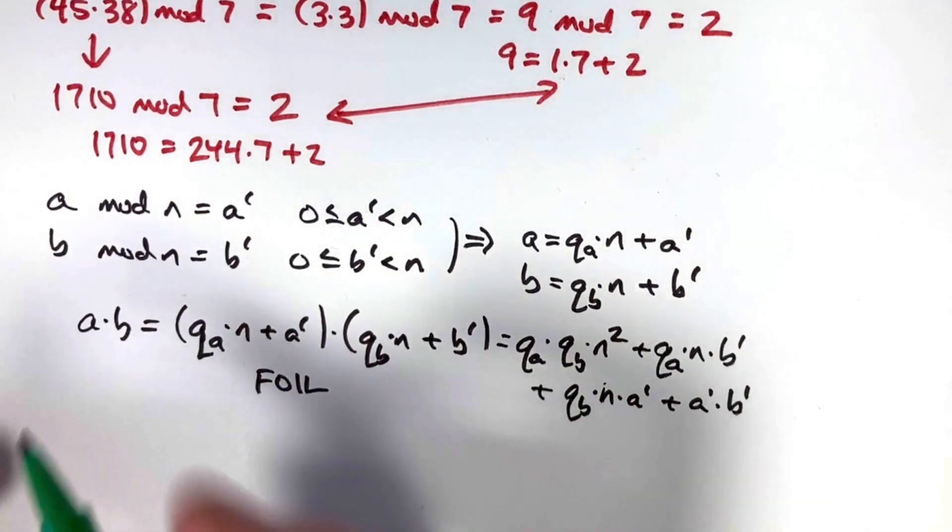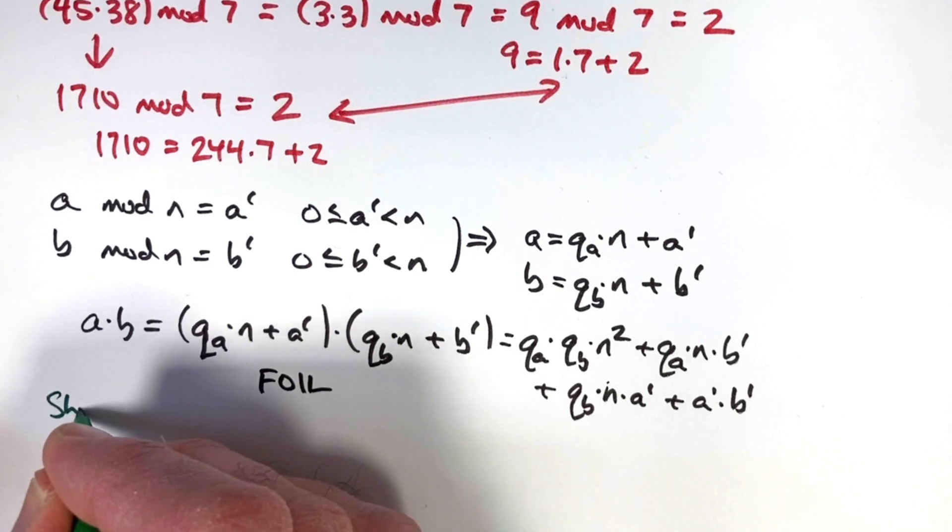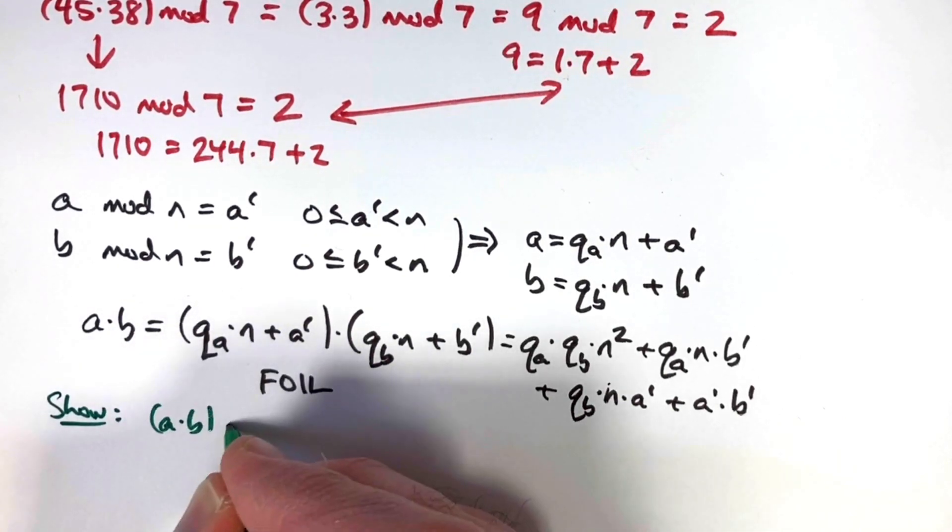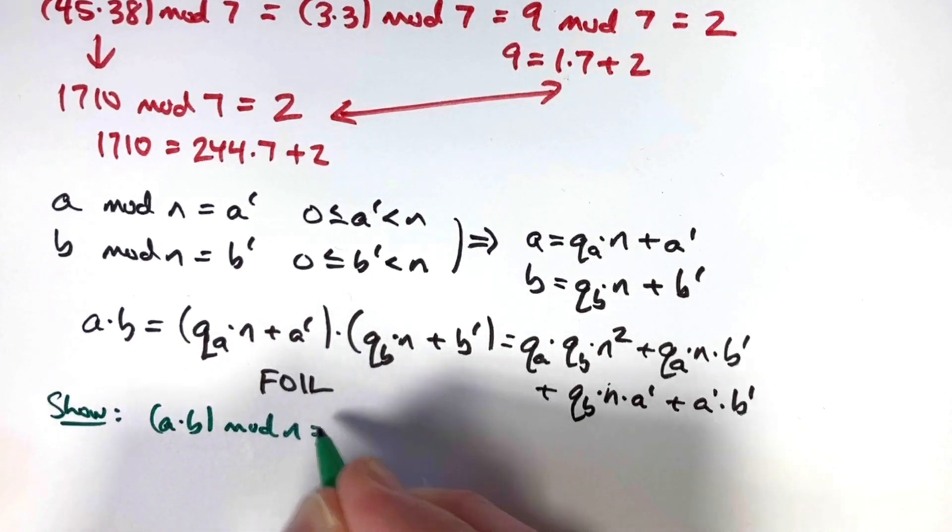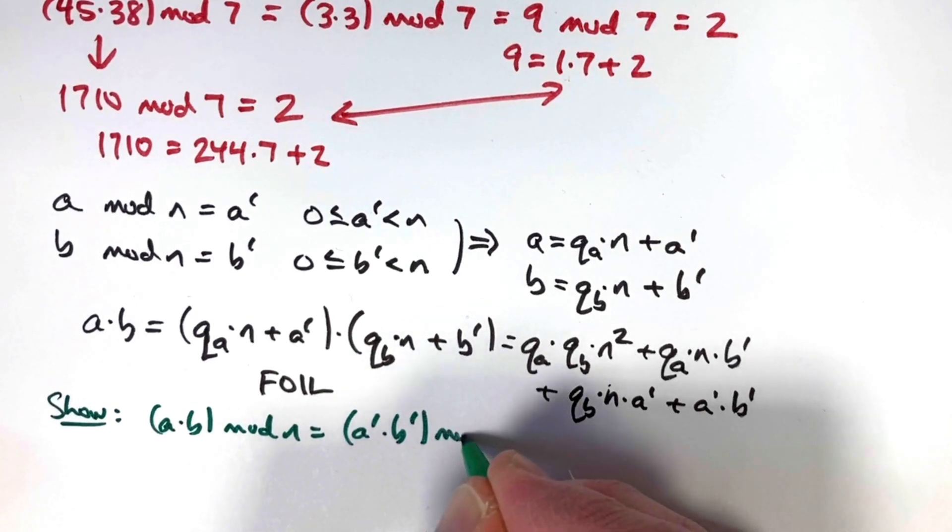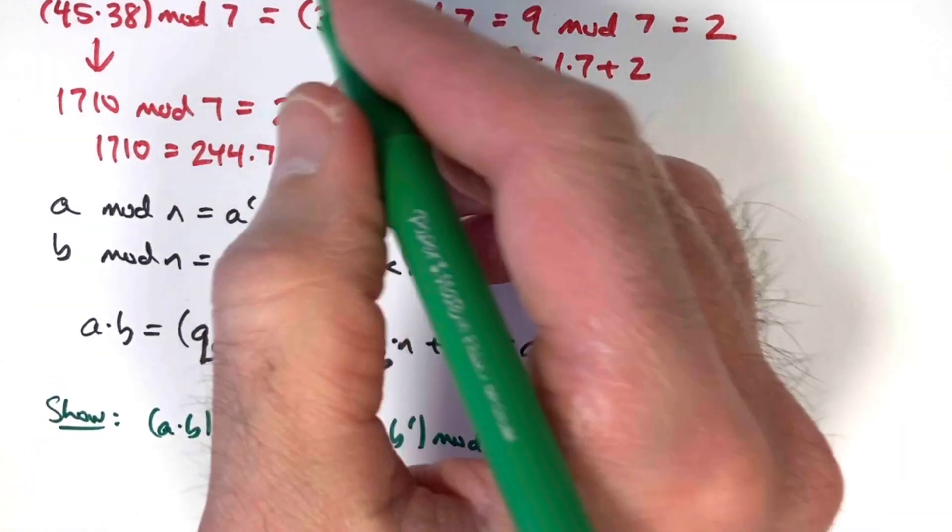What am I ultimately trying to show? I haven't asked that yet. That would be worth asking. My goal is to show that when I do a times b mod n, I get the same thing as what I get when I compute a prime times b prime mod n.